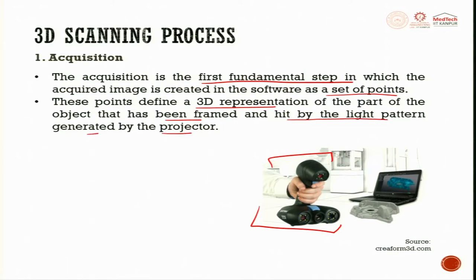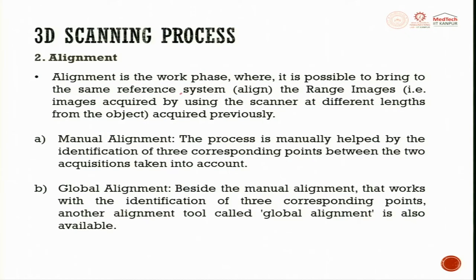These points define a 3D representation of the part of the object that has been framed and hit by the light pattern generated by the projector. Once a raw 3D reconstruction has been obtained, the scan can be improved by adding more views that correspond to the missing points. In alignment, it is possible to bring the same reference system — aligning range images acquired at different lengths, orientations, and rotations.